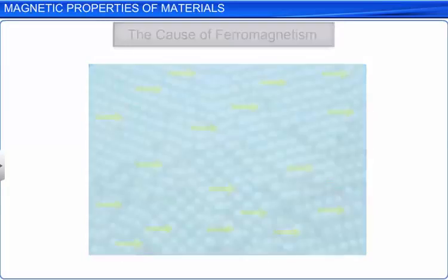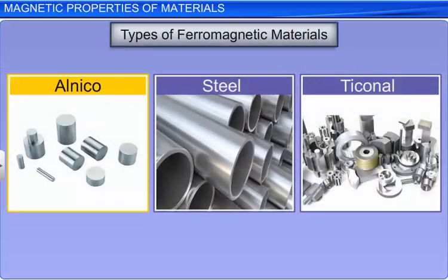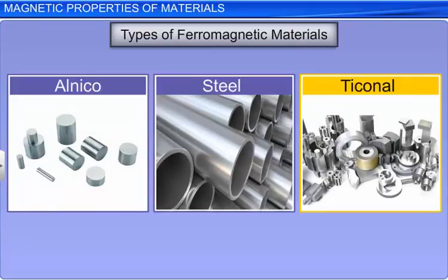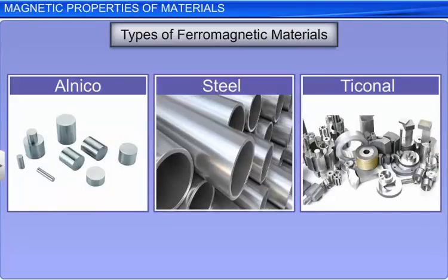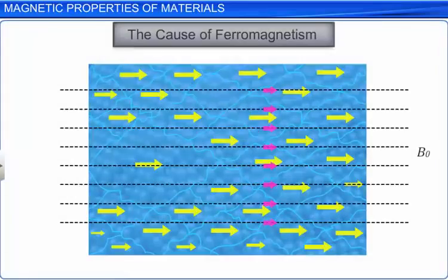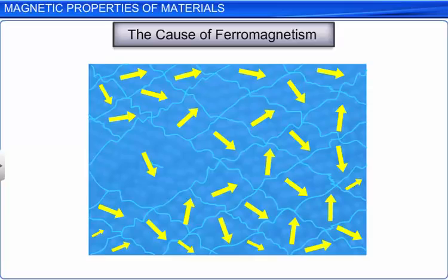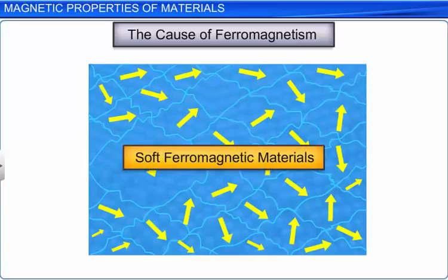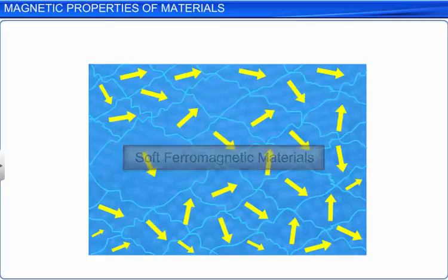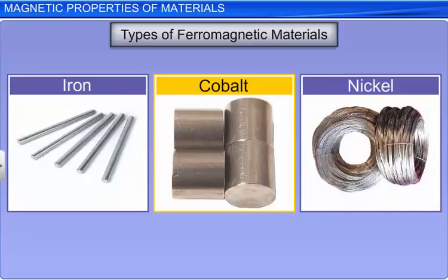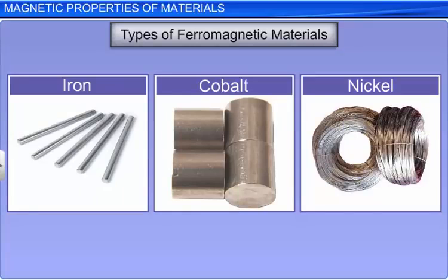Alnico, steel, ticconel, etc. are the examples of hard ferromagnetic materials. These materials are used to prepare permanent magnets. There are some other materials which can lose their magnetization when the external magnetic field is removed. These materials are called soft ferromagnetic materials and they are used to prepare temporary magnets. Iron, cobalt, nickel, etc. are the examples of soft ferromagnetic materials.